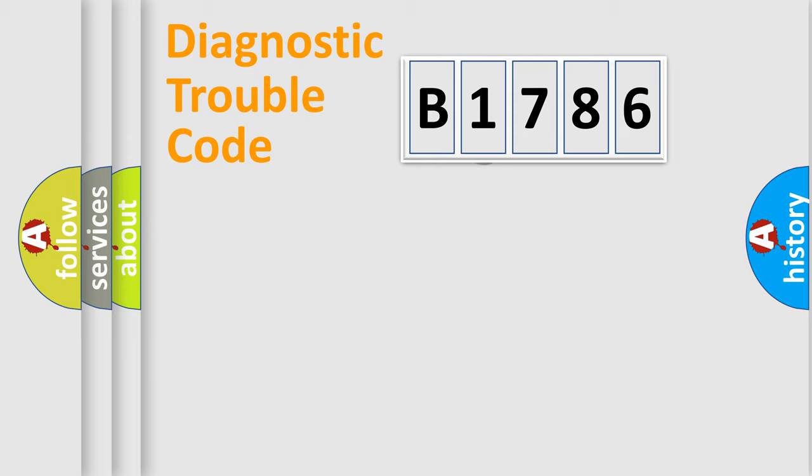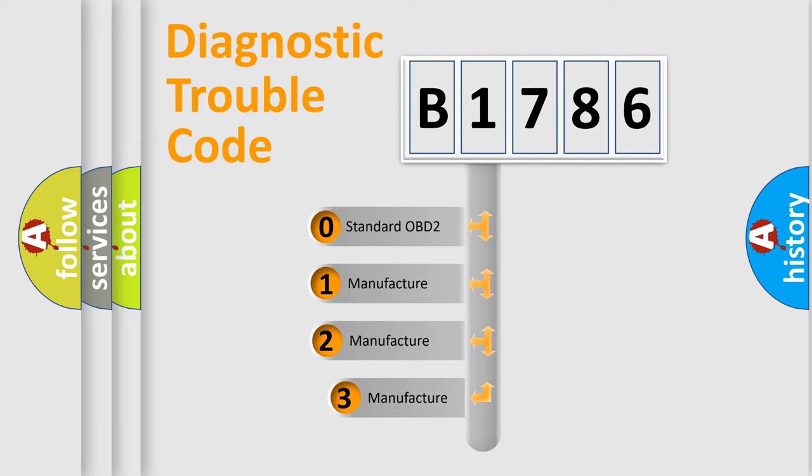Powertrain, Body, Chassis, Network. This distribution is defined in the first character code.